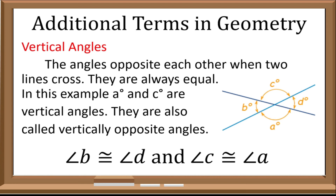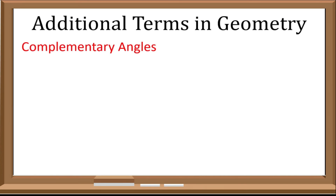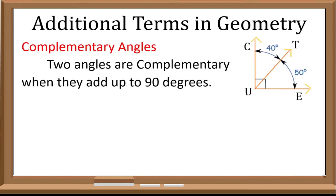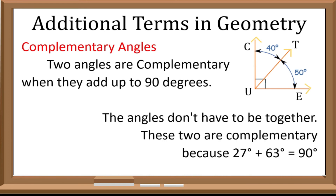Another one is complementary angles. Two angles are complementary when they add up to 90 degrees. We have this example: angle CUT and angle TUE are complementary. These angles don't have to be together. These two are complementary because 27 degrees plus 63 degrees is equal to 90 degrees.